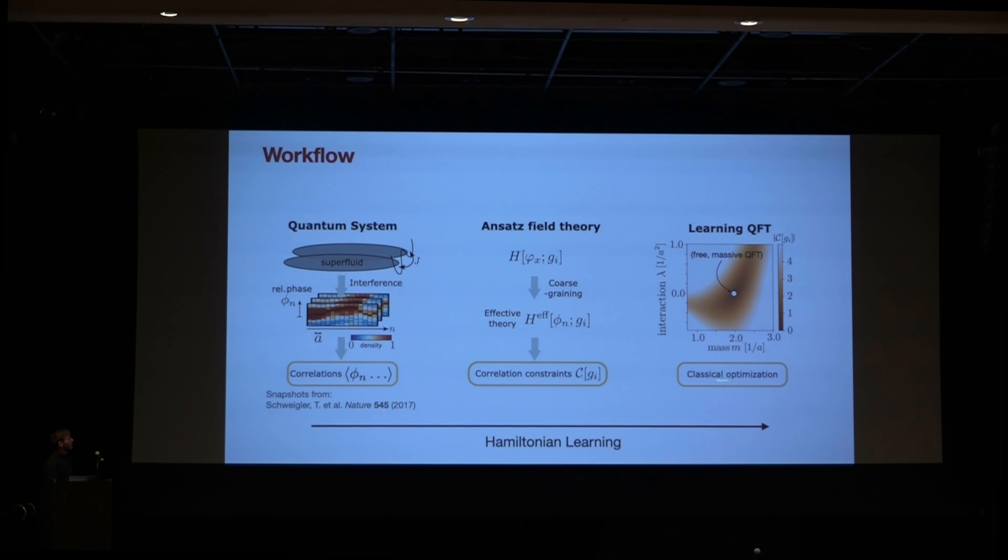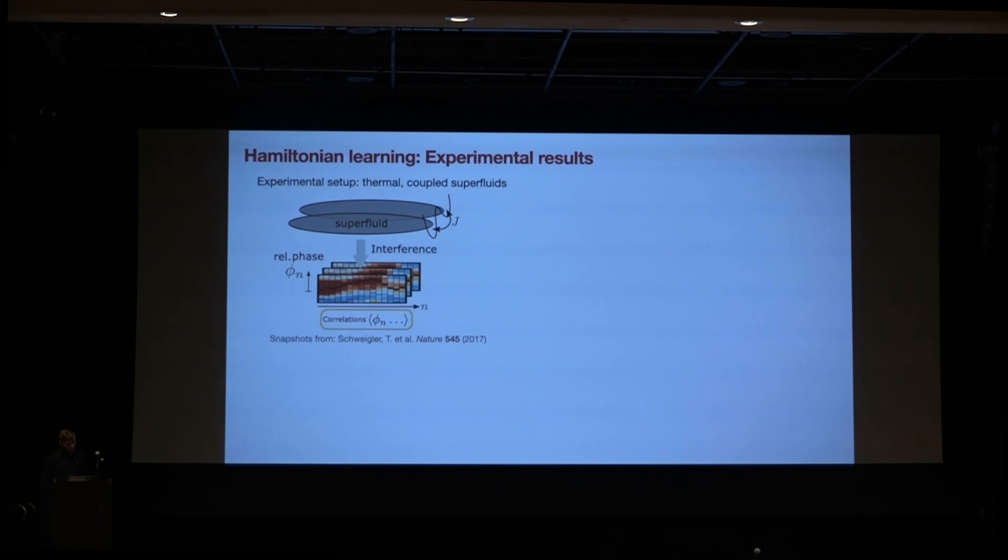So you can read the scheme from left to right, which would be a Hamiltonian learning procedure. You start from the data and get a set of coupling parameters over here. And conversely, you can also see it as a verification step. So given a set of constraints over here, you can find the minimum value of the constraint. And then going back, it gives you verification to what degree this platform actually serves as a quantum simulator of QFT.